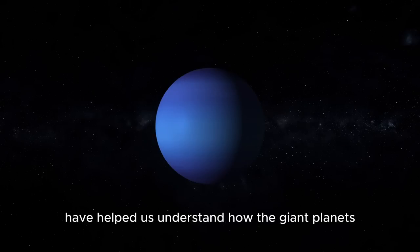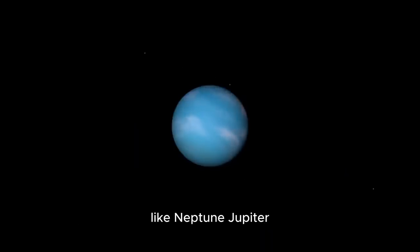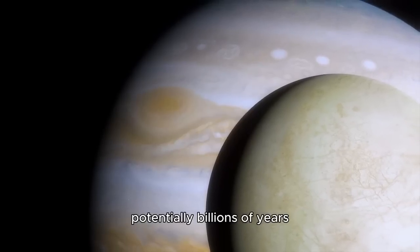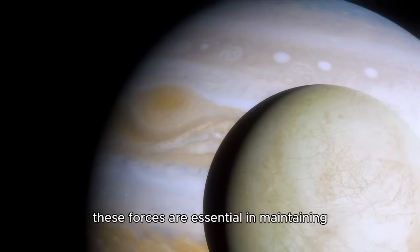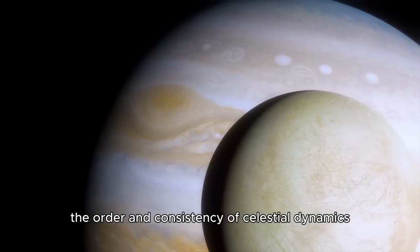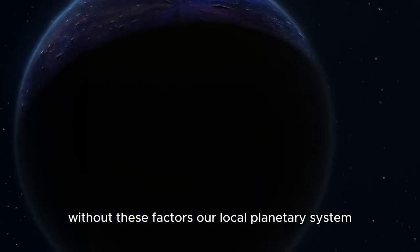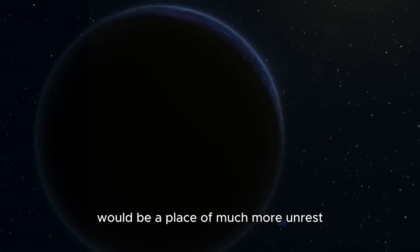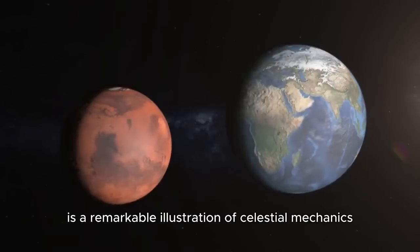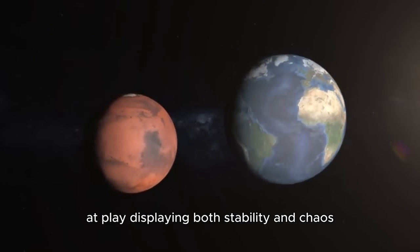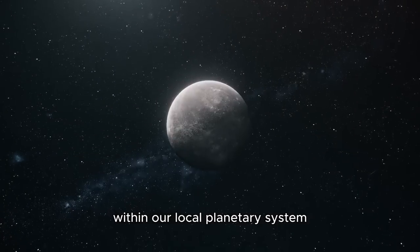Recent simulations have helped us understand how the giant planets, like Neptune, Jupiter, and Saturn, influence Pluto's orbit around the Sun. Jupiter's massive gravity is strong enough to keep Pluto on a stable path for potentially billions of years. These forces are essential in maintaining the order and consistency of celestial dynamics. Without these factors, our local planetary system would be a place of much more unrest and unpredictability. Pluto's orbit is a remarkable illustration of celestial mechanics at play, displaying both stability and chaos within our local planetary system.